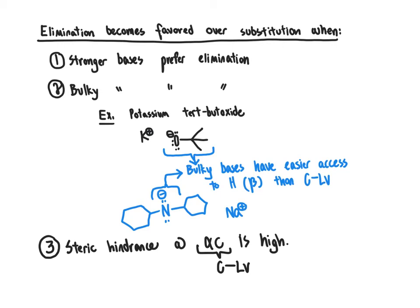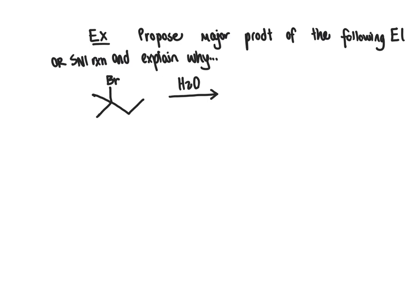Let's do an example of a competition between elimination and substitution to see what will be more favorable. We're going to propose the major organic product of a reaction and explain why — you're given the clue that it's either an E1 or an SN1 reaction, and we need to decide which is the major pathway. To accomplish that, we'll think about the criteria we just went over for deducing whether elimination or substitution is more favorable.